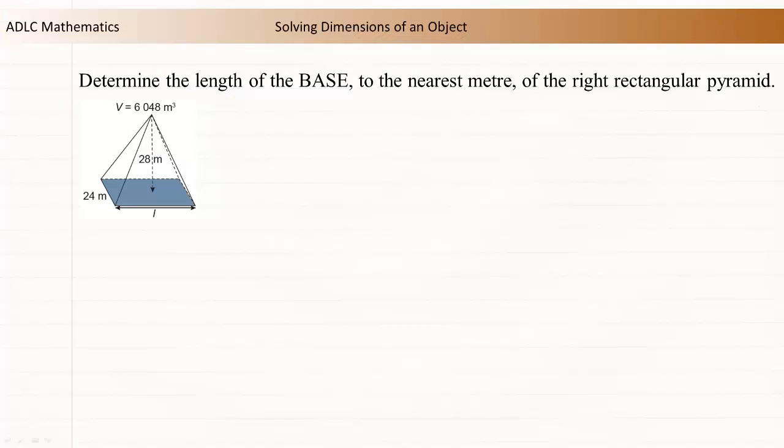When given the volume of an object along with some of its dimensions, you can often determine an unknown dimension. This example asks for the length of the base of a right rectangular pyramid when given the volume of the pyramid along with its height and base width.